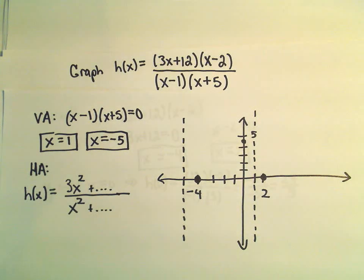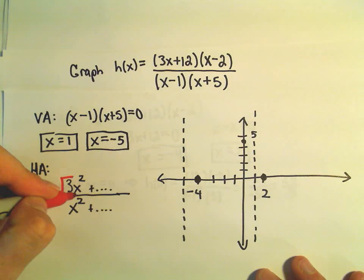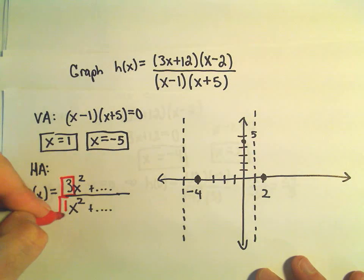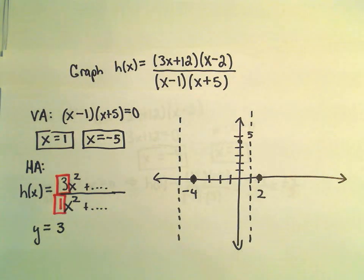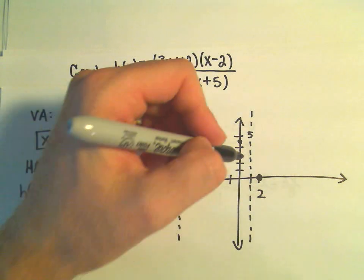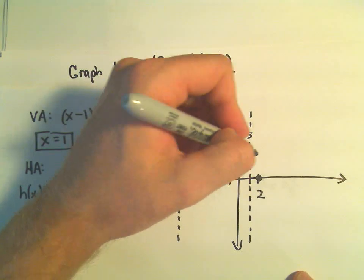Well, the degree of the numerator is equal to the degree of the denominator. So that means I use the ratio of the leading coefficients. Well, there's a 3 on top. There's a 1 on the bottom. So that means the horizontal asymptote is going to be at the line y equals 3.